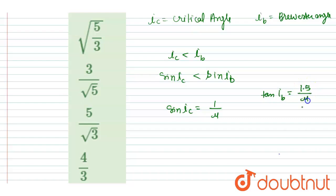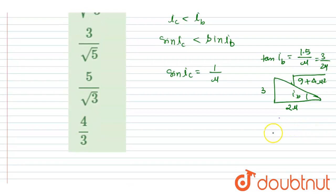Now you could see this is the triangle. This angle and this angle and this angle is i_b. This is 3 and this is 2 mu. And this will be under root of 9 plus 4 mu square, right? Okay, so you can see sine i_b is 3 by square root of 9 plus 4 mu square.